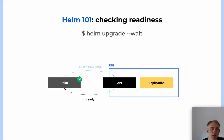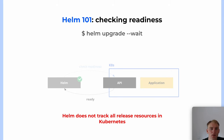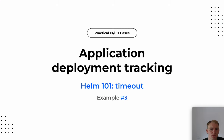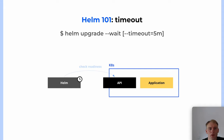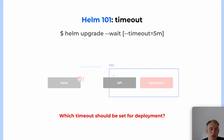But Helm does not guarantee that the application is ready, because it is based only on the status of the main resources in Kubernetes. For simple scenarios, Helm tracking is usually enough. Now regarding timeout: after applying the manifest, the command will exit either if the application is ready or the timeout has expired. If the application fails, we wait for the timeout. A logical question is: what timeout to set for deployment? If you estimate it too low, the deployment may fail too quickly. If you estimate it too high, the deployment will have to wait a long time. You have to decide between two bad options.